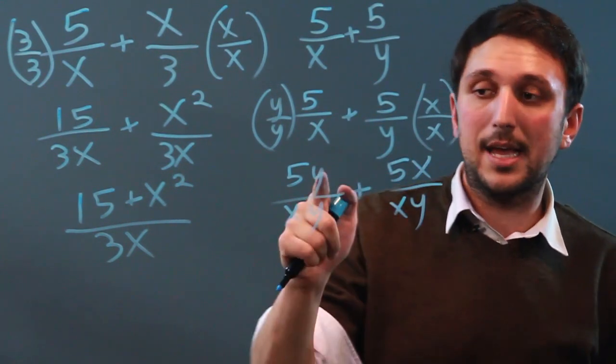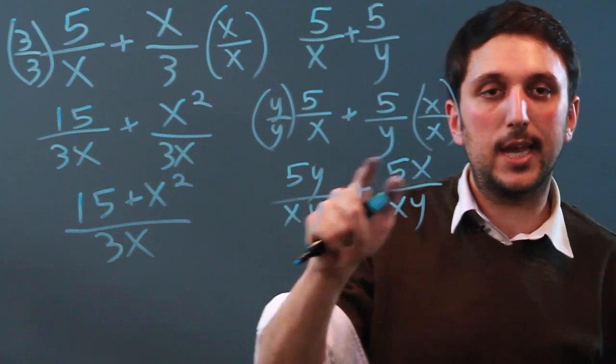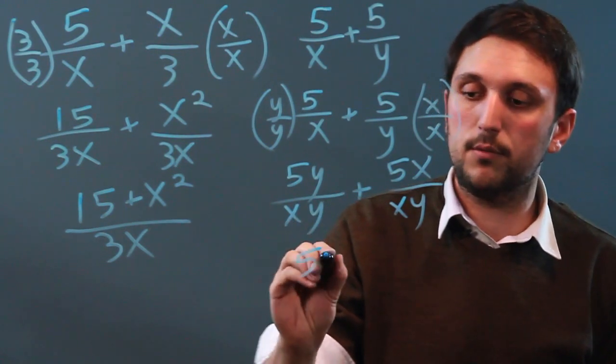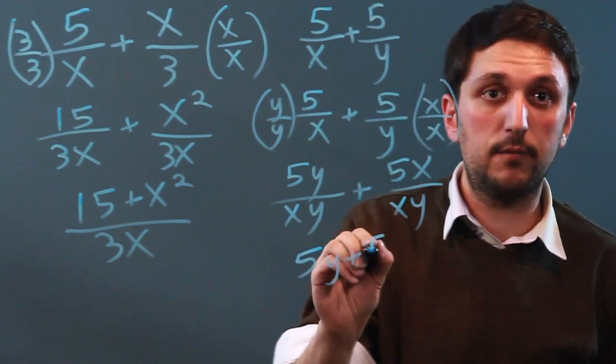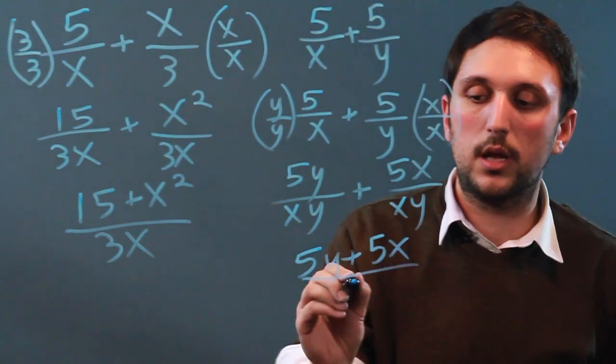So again, now that the denominators are the same we can add the numerators. So our final answer is 5y plus 5x over xy.